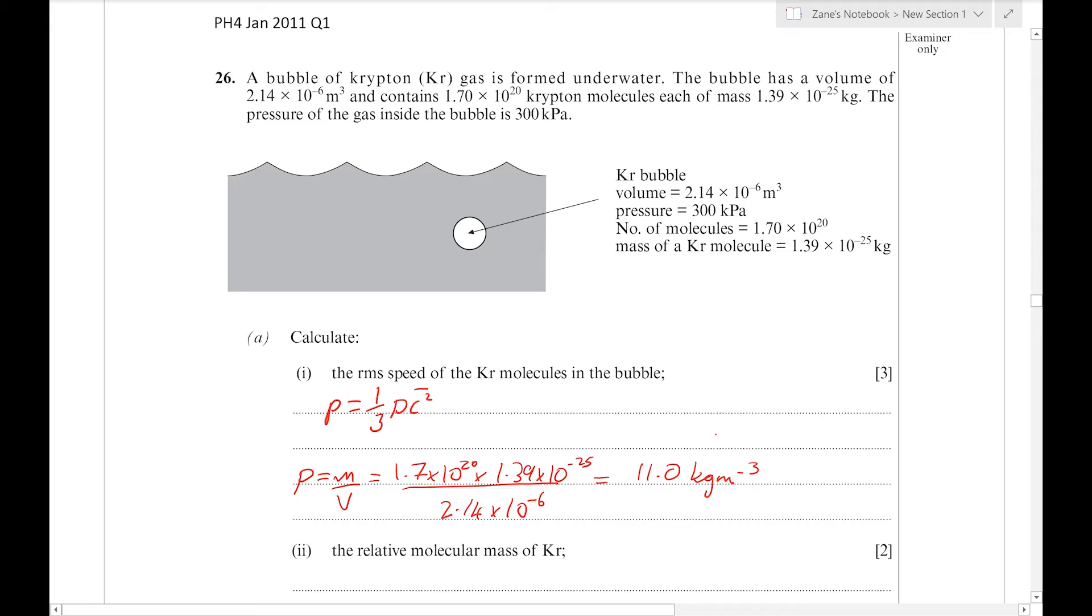The equation rearranges to c_rms = √(3p/ρ). Let's put in the figures: 3 times the pressure of 300 kPa (don't forget the 10³) divided by that density we just worked out. Putting that into a calculator gives about 285 m/s, depending on any rounding.